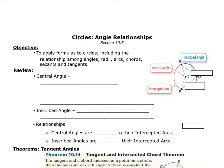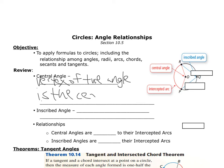We're going to continue to talk about some angle relationships in circles. Let's review: a central angle is an angle where the vertex is at the center of the circle. For instance, angle ROP — with O as the center and vertex — is a central angle.